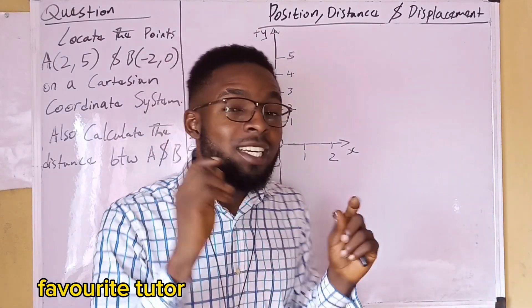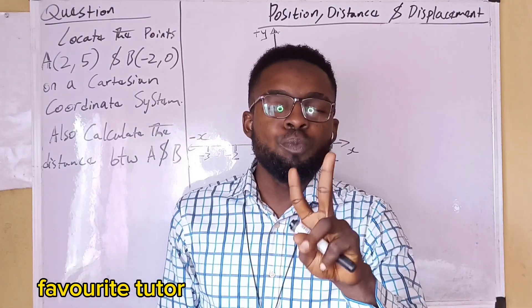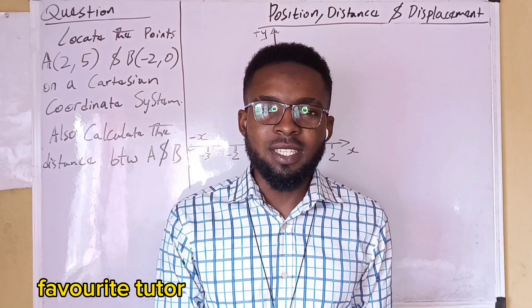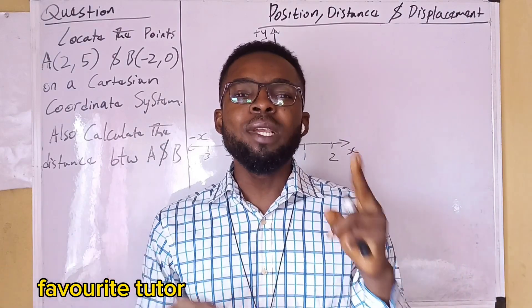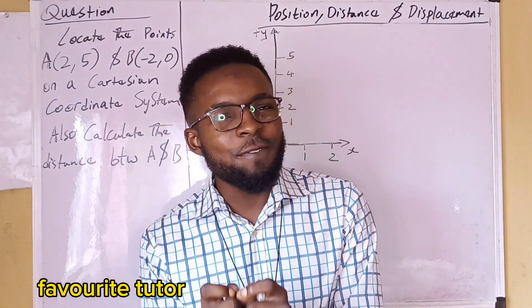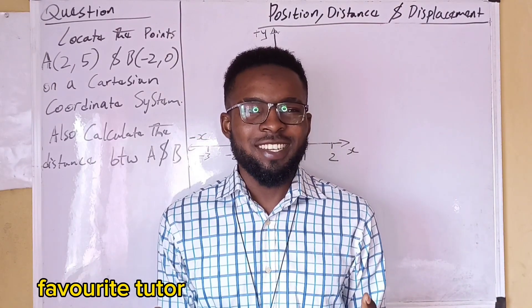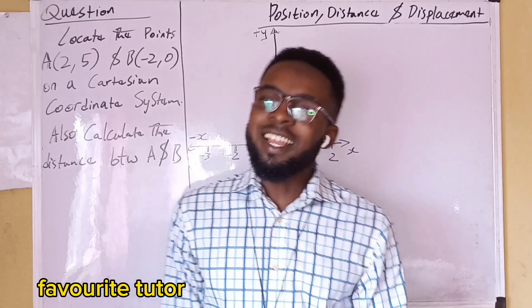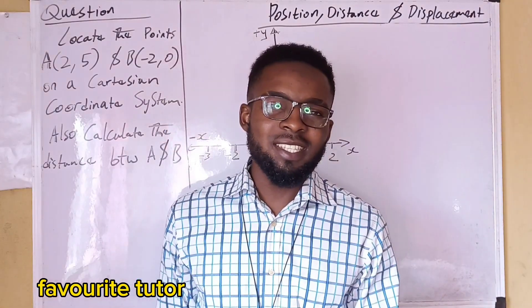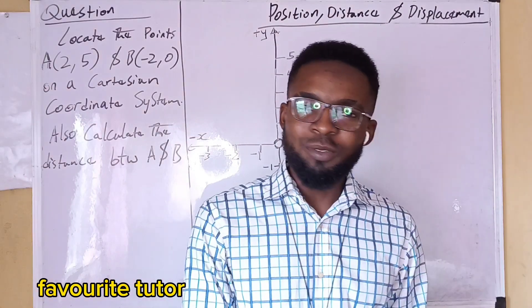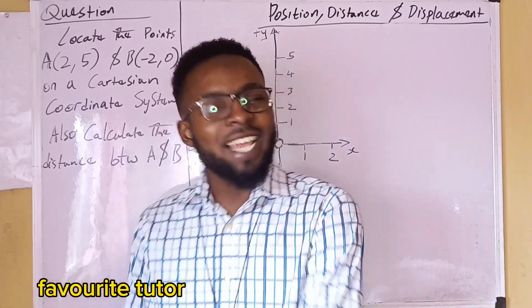Distance is the extent of space covered between two points. Displacement, on the other hand, is the extent of space covered between two points in a specified direction. They have some similarities. Distance is a scalar quantity, while displacement is a vector quantity — because distance is just about magnitude and no direction, while displacement has magnitude and direction.